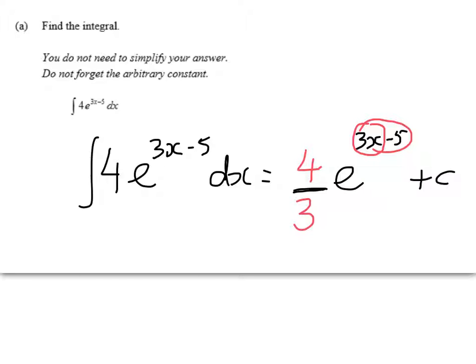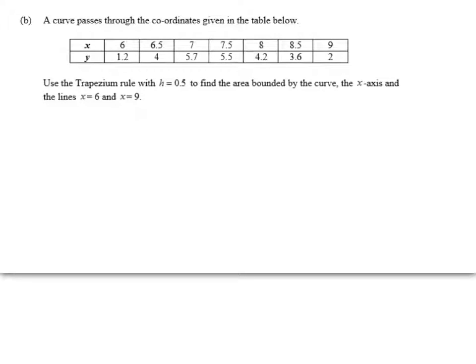Okay, on to the next one. Nice easy trapezium rule question for another achieved mark. Use the trapezium rule with h equals 0.5 to find the area bounded by the curve, the x-axis and the lines x equals 6 and x equals 9. There's 6 there and there's 9 there.